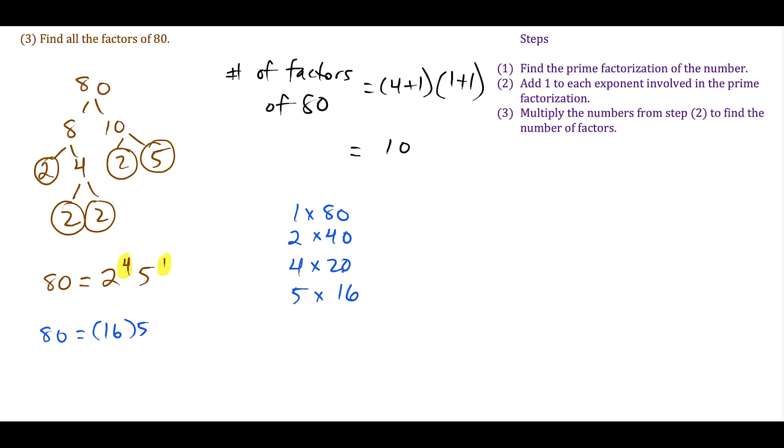We try 6 next, but 6 doesn't go in. 7 doesn't work. 8 works: 8 times 10 equals 80. If you're unsure if this is all of them, remember we said there would be exactly 10 factors, and we've found 10. So we found all the factors, and we write our answer in set notation.